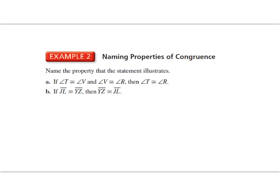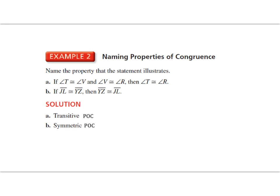With example two, let's make sure we know how to use our properties of congruence correctly. If angle T is congruent to angle V, and angle V is congruent to angle R, then angle T is congruent to angle R — that's the transitive property. For the next example, if segment JL is congruent to YZ, and YZ is congruent to JL, that's the symmetric property of congruence.